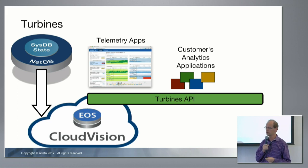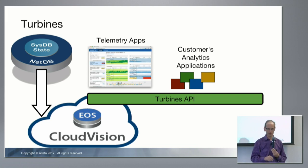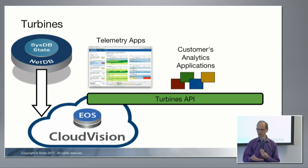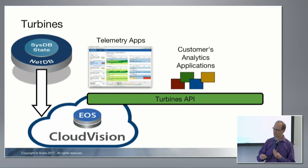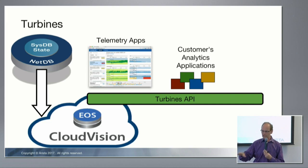So you have a historical record of all switch state over all time. We have our own telemetry apps that run on top of that — CloudVision telemetry gives you graphs, syslog correlation, and search. In addition, we have the Turbines API, which is an API on which you can write state machines.